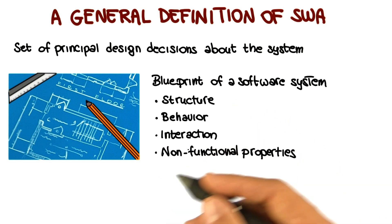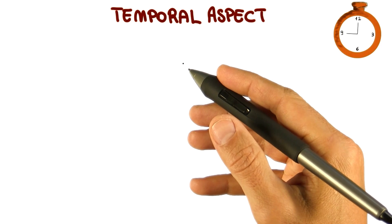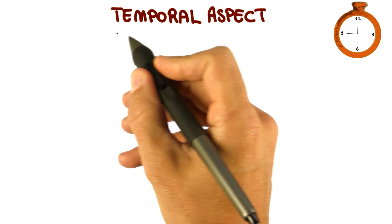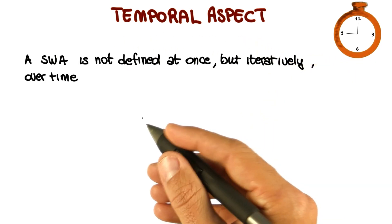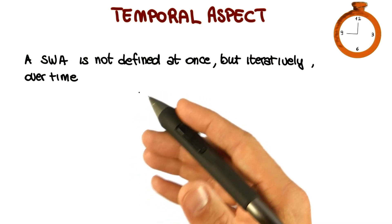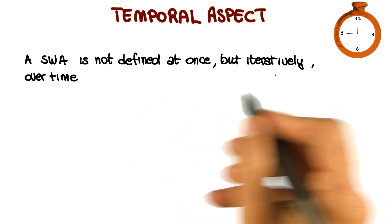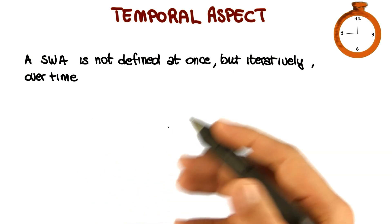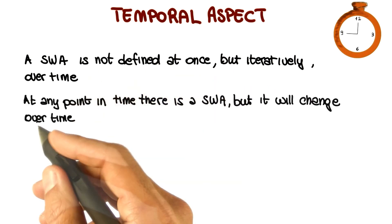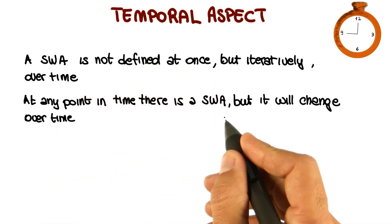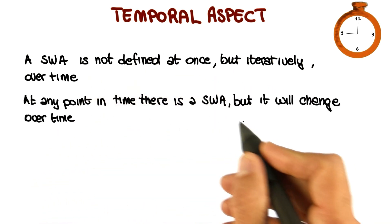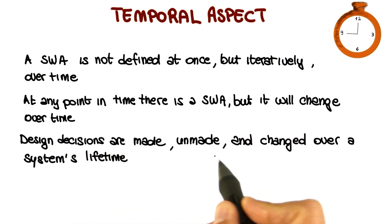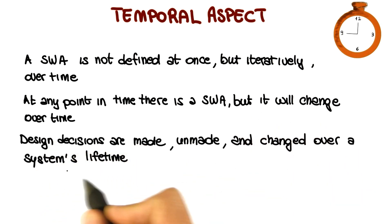We will see how this happens in the rest of the lesson. Another important point about software architecture is that there is a temporal aspect to it. You don't build a software architecture in a single shot, but you do it iteratively over time. You go from having no architecture to your final architecture, so at any point in time there is a software architecture, but it will change over time. This happens because design decisions are made and changed over a system's lifetime.